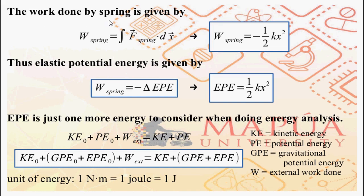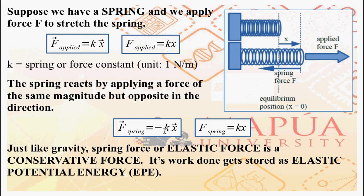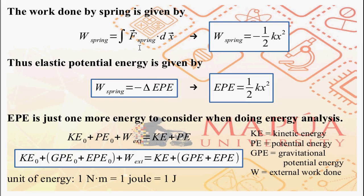The work done by a spring, work done by a spring is equal to integral of F spring dotted with dx. Since F spring is equal to negative kx, negative kx dotted with dx, get the integral that will give you negative one-half kx squared. The work done by a spring is negative one-half kx squared.